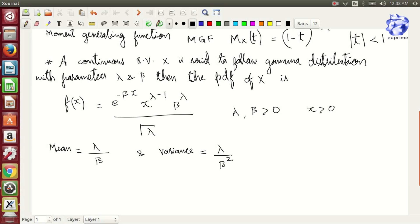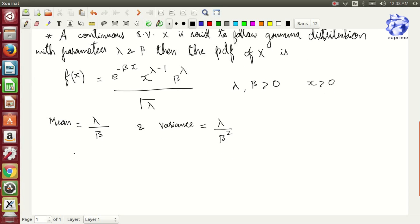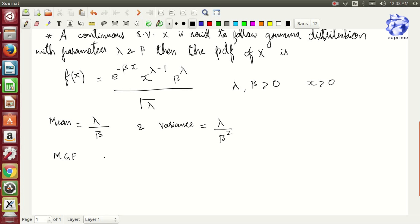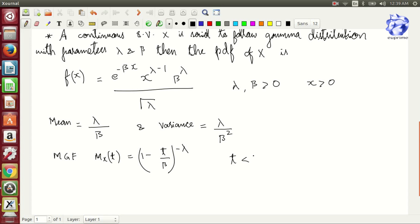Here the mean is λ divided by β and variance equals λ divided by β squared. The moment generating function M_X(t) equals 1 minus t over β to the power minus λ, where t is less than β. Now let us discuss some properties.